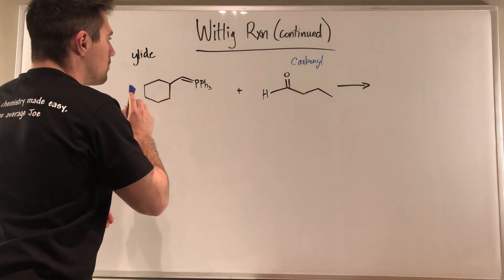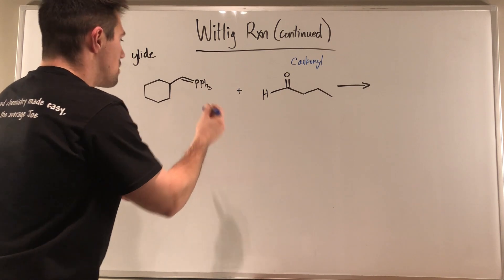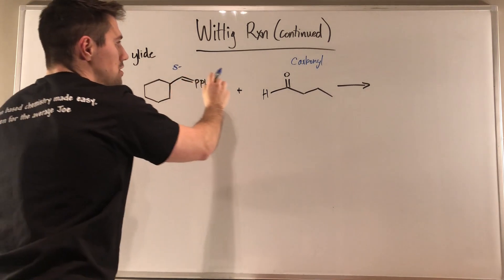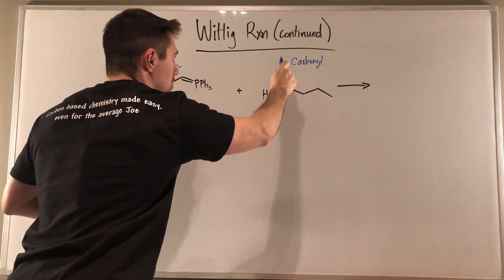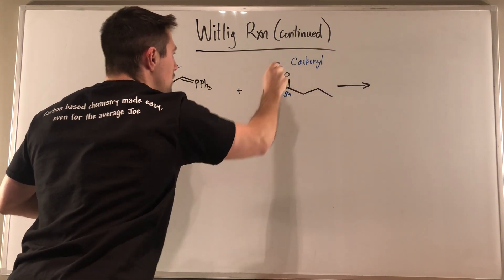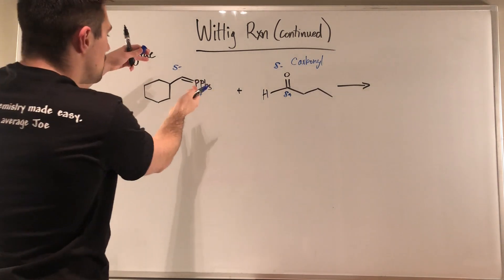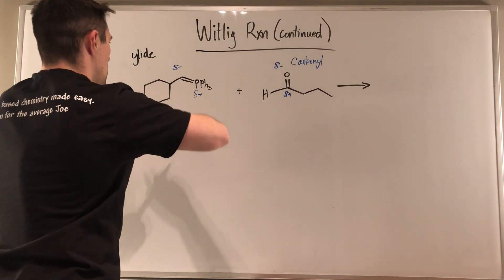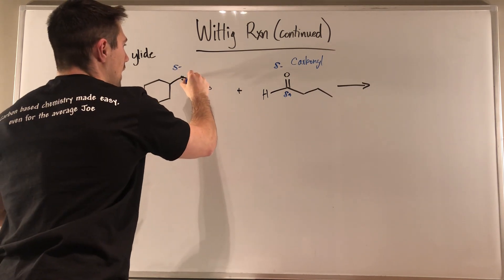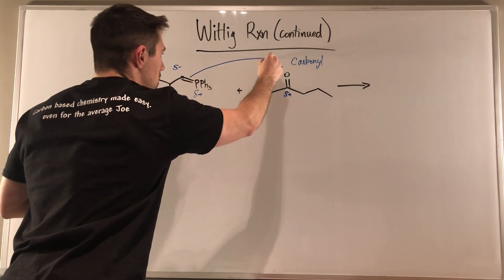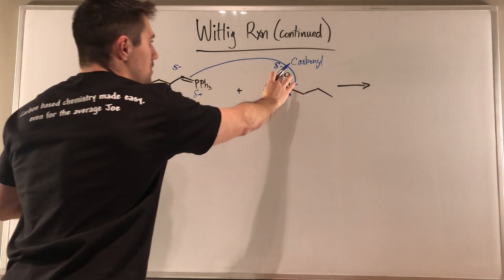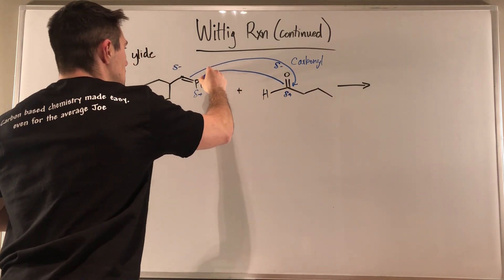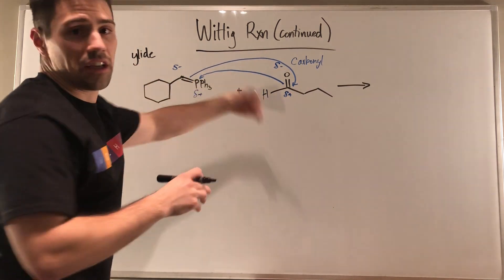We have the lone pair on the carbon and a positive charge on the phosphorus. This carbon being negative — we saw that in the resonance structure — is interested in the partially positive carbonyl carbon. And this oxygen, which is partially negative, is interested in the partially positive phosphorus. We have a pair of partial positive and partial negatives that are interested in one another. So this carbon is going to take the electrons in this double bond and bond to the carbonyl carbon, and the oxygen is going to take the pair of electrons from the double bond — and that oxygen is very interested in the phosphorus. So we kind of have one from each budding up with the other.